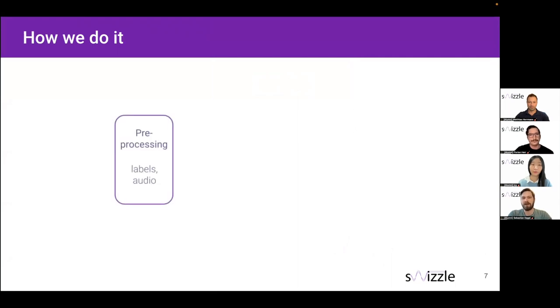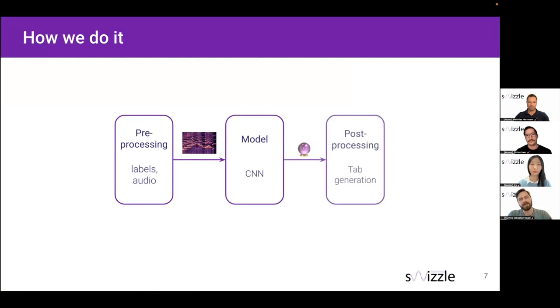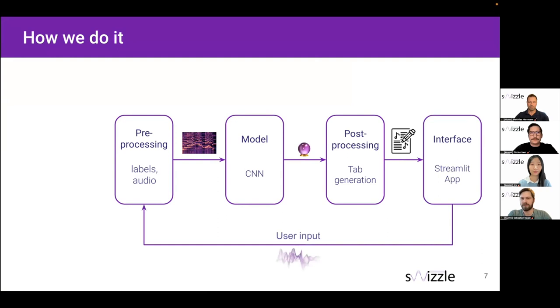In the first step, all data that our app receives is pre-processed. And this pre-processed data is then handed to the model, which tries to estimate the notes that were played. And these estimates are then cleaned and reshaped during post-processing to represent the tabs that Flo mentioned earlier. Finally, these tabs are then shown in our app for the user. It is on this app where the user can also upload their own data, here called user input, and this audio data then enters our pipeline in the pre-processing step.